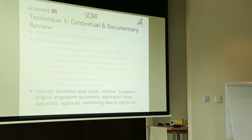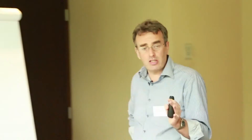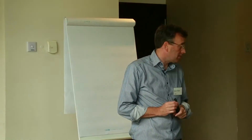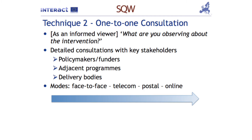A second technique frequently used in delivering an impact evaluation is what I call one-to-one consultation. You are asking a series of informed viewers: what do you think about this intervention? Do you, as an expert, think this intervention is doing what you thought it was going to? You might be a commission official, a national government official, a member of the managing authority, or a member of the joint secretariat. Expert views on a one-to-one basis — what do you observe about this intervention? Policymakers, funders, people who work in adjacent programmes, or representatives from delivery bodies — taking their view on how they think this thing is running.